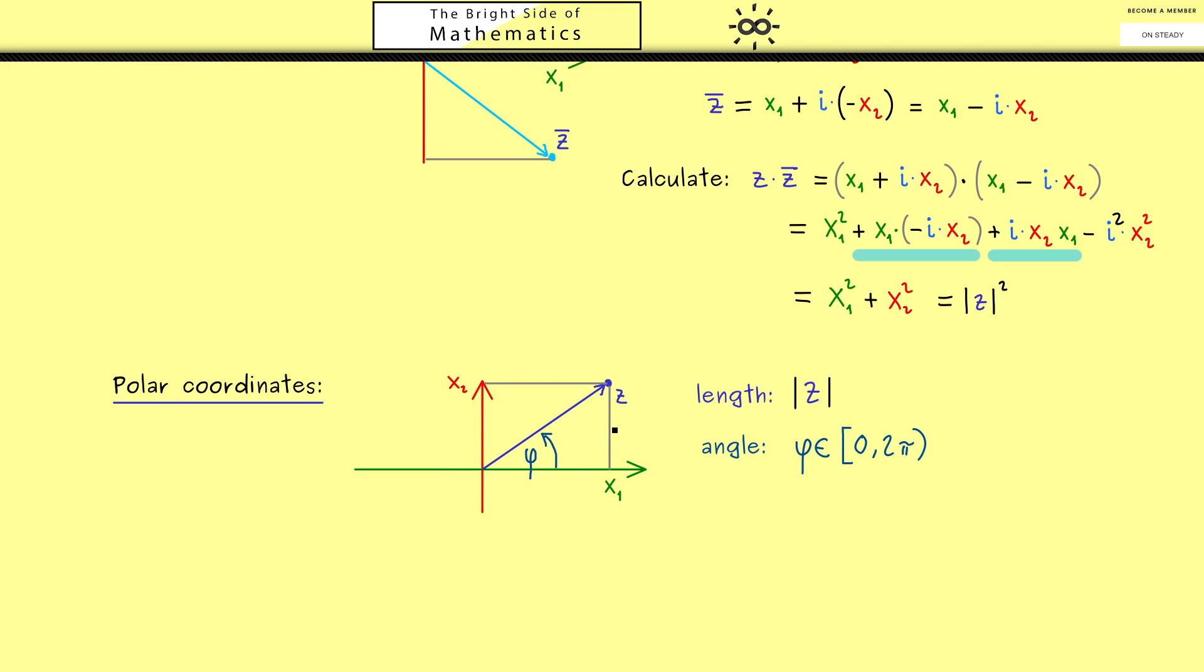Indeed what we can use is the arc tangent. The inverse function of the tangent. So more concretely we take the side on the y axis so x₂ and divide it by the side of the x axis so x₁. And then the inverse of the tangent arctan gives us the angle φ. However please note here this formula here for φ is only correct if we work in this region of the coordinate system. If we work in another region we have to manipulate this formula a little bit.